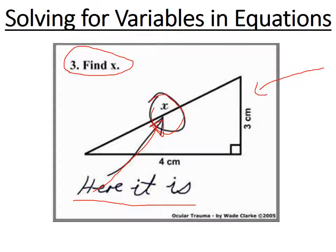Just to clarify: a variable is a number that can change. X will be different in different situations — X can be 4, 5, or 6. In science there'll often be an unknown variable and you have to figure out what it is. For example, you might see X plus 6 is equal to 10 and need to find what X is — that's the unknown variable.